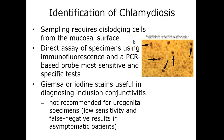To identify chlamydia, sampling is done from cells dislodged from mucosal surfaces of these various tracts. A probe test determines if those microbes are present. There are also iodine stains used to look for organisms that cause conjunctivitis.